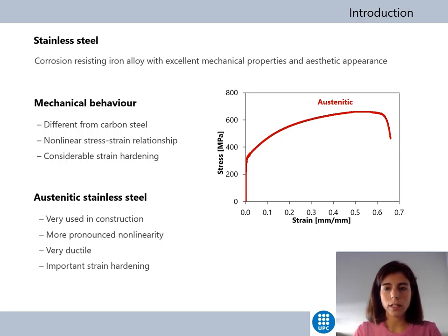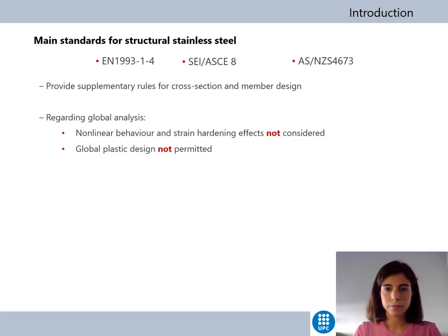There are many types of stainless steel depending on their chemical composition. In construction, one of the most used is the austenitic stainless steel, which has a more pronounced nonlinearity, is very ductile and has an important strain hardening.